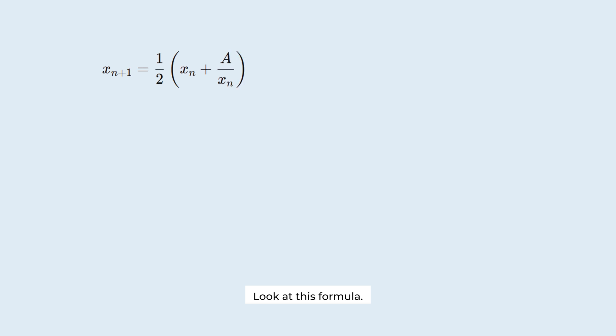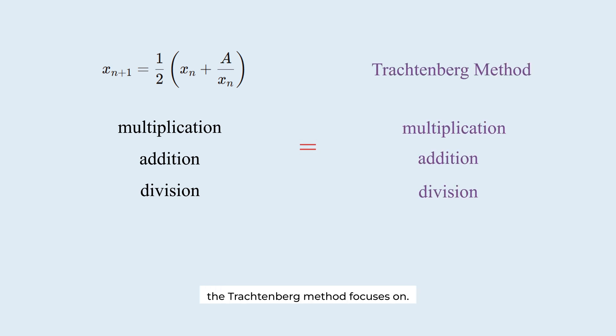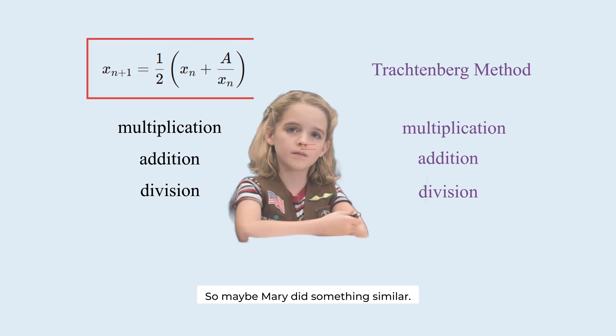Look at this formula. It is just multiplication, addition, and division. The same kinds of operations the Trachtenberg method focuses on. So maybe Mary did something similar. But all in her head, in seconds? Hard to say.